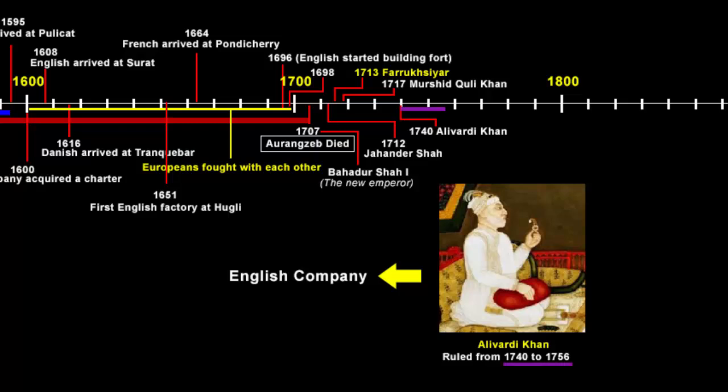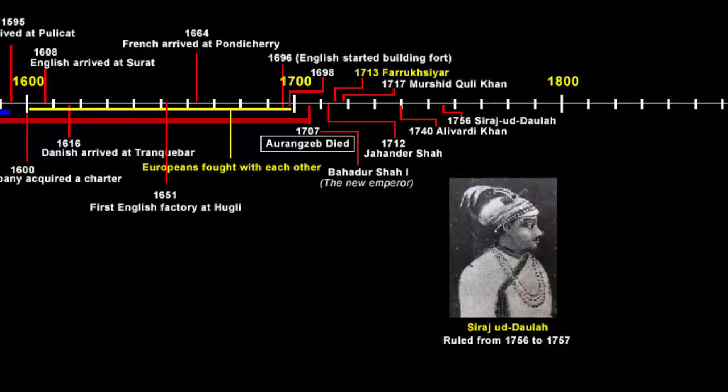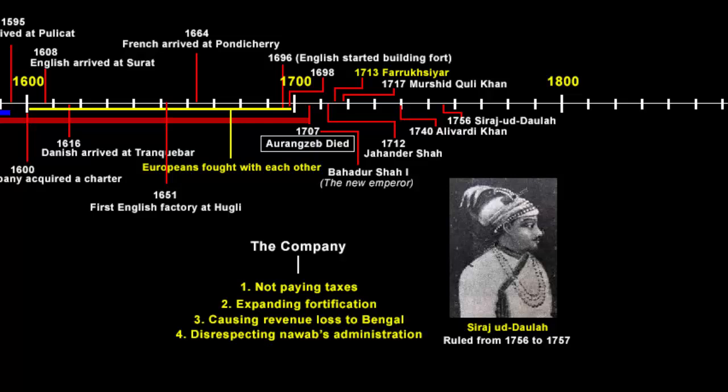The third strong ruler of Bengal was Sirajud Daulah, the grandson of Alivardi Khan. He became the Nawab in 1756 soon after the death of his maternal grandfather. Even Sirajud Daulah did not like the English company's behavior and way of trade. He wanted to do something because the company was depriving the Bengal government of huge amounts of revenue and undermining the authority of the Nawab. The reasons behind the conflicts between the Nawabs of Bengal and the English company were: the company was not paying taxes, they were expanding their fortification, causing heavy revenue losses, and writing disrespectful letters to humiliate the Nawab and his officials.